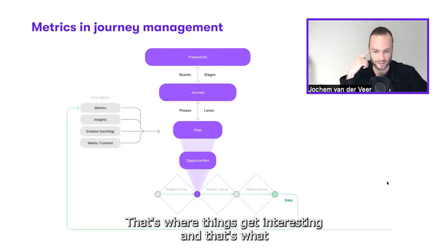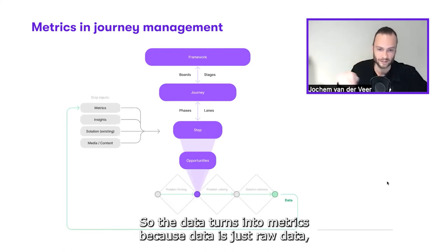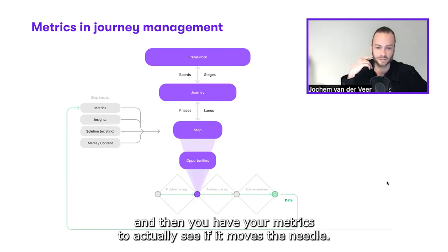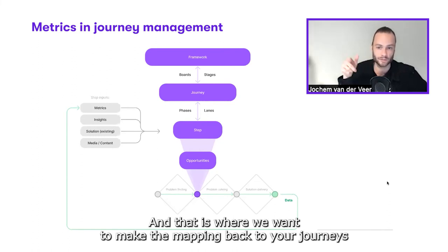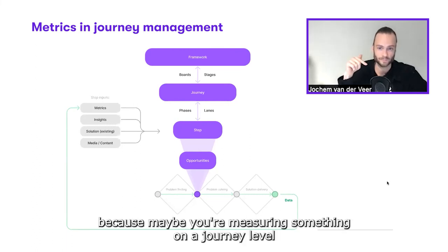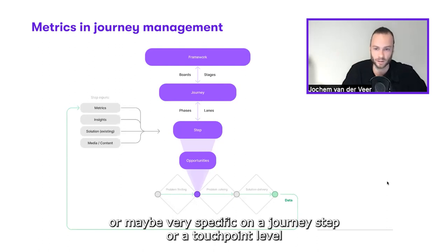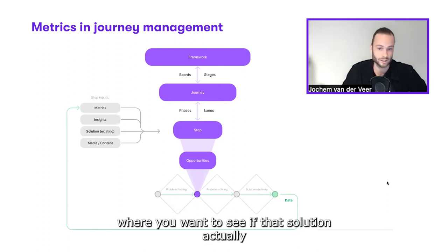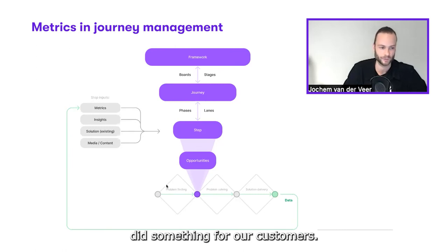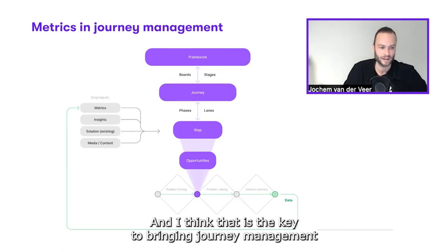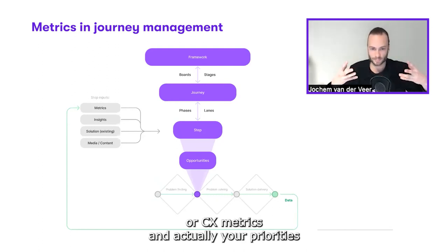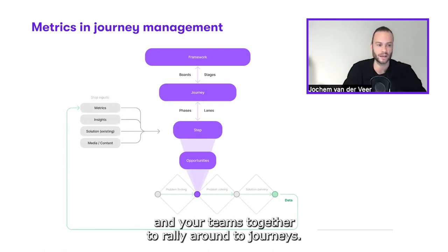That's what we're going to talk about today. The data turns into metrics, because data is just raw data, and then you have your metrics to actually see if it moved the needle. That is where you want to make the mapping back to your journeys, because maybe you're measuring something on a journey level or maybe very specific on a journey step or touchpoint level where you want to see if that solution actually did something for your customers. That is key to bringing journey management, your CX metrics, and actually your priorities and your teams together to rally around the journeys.